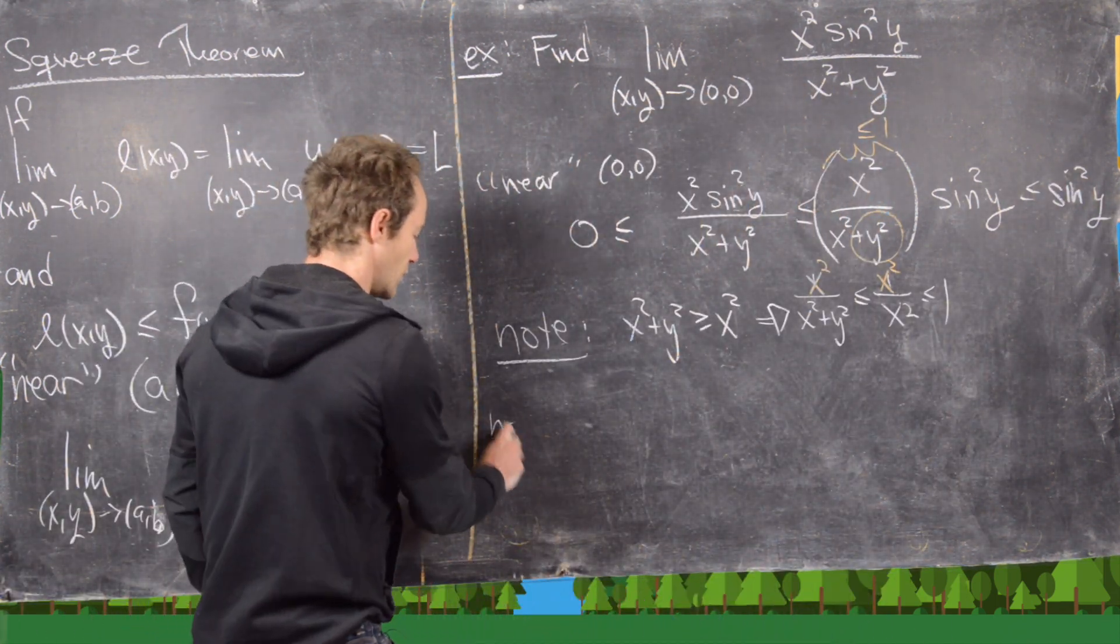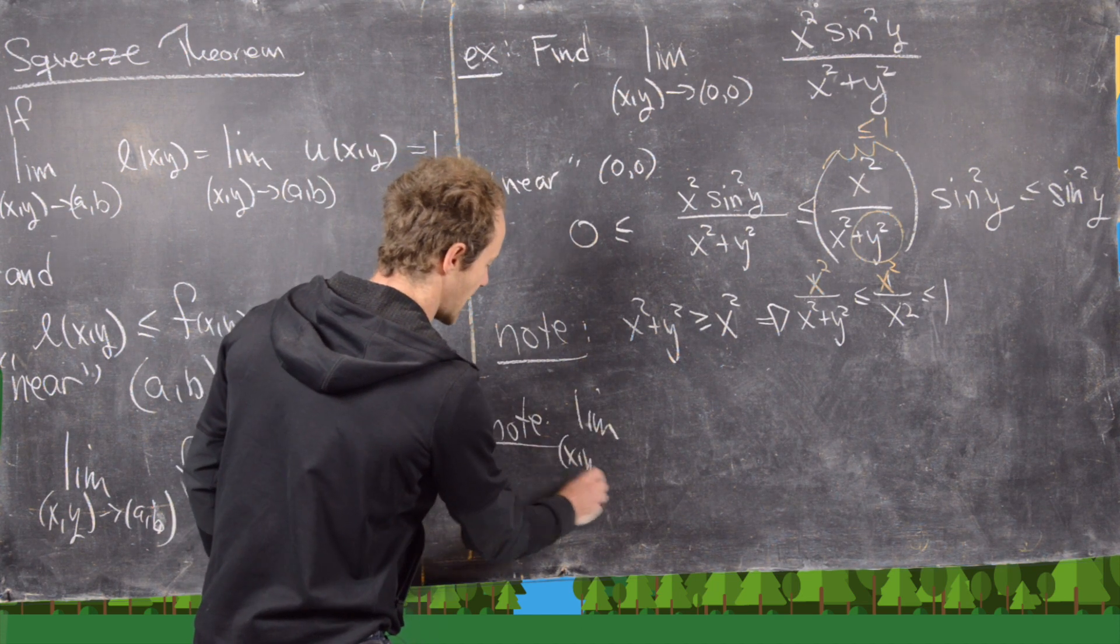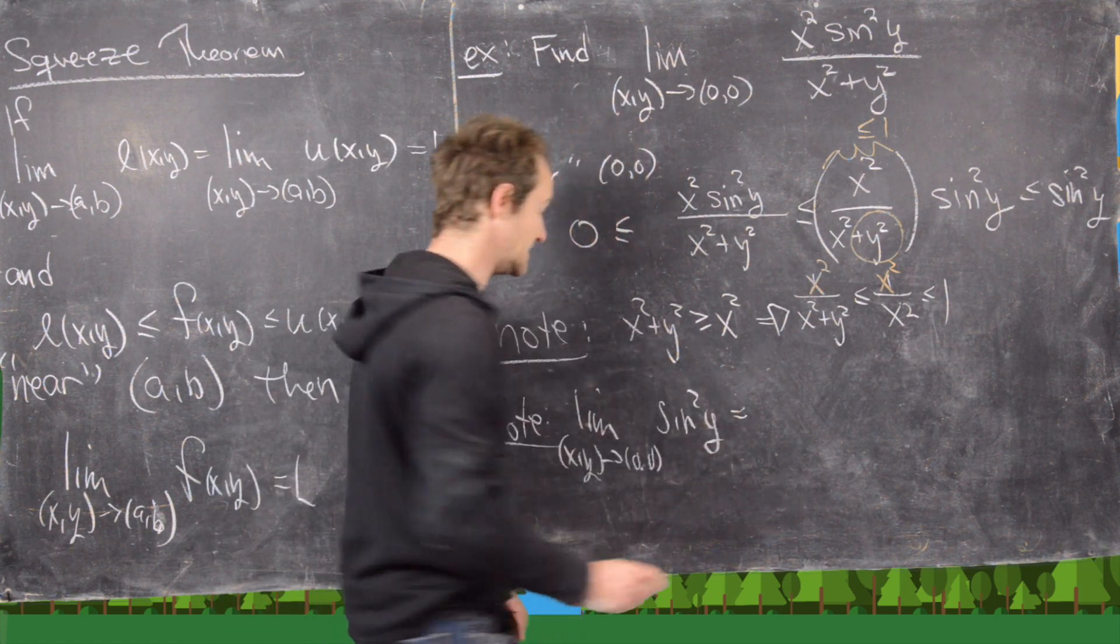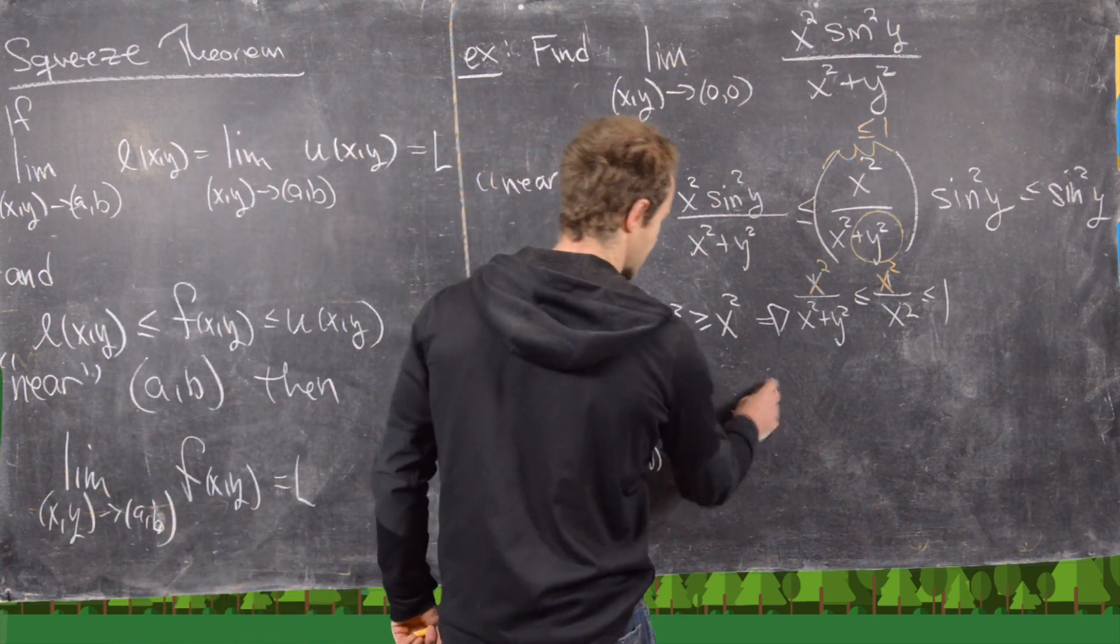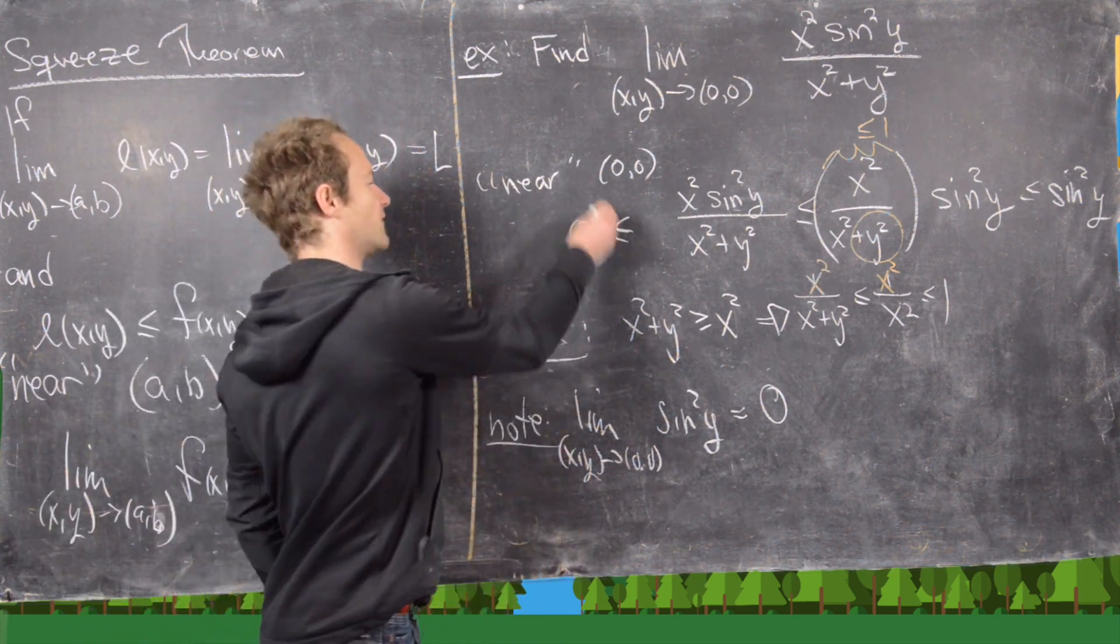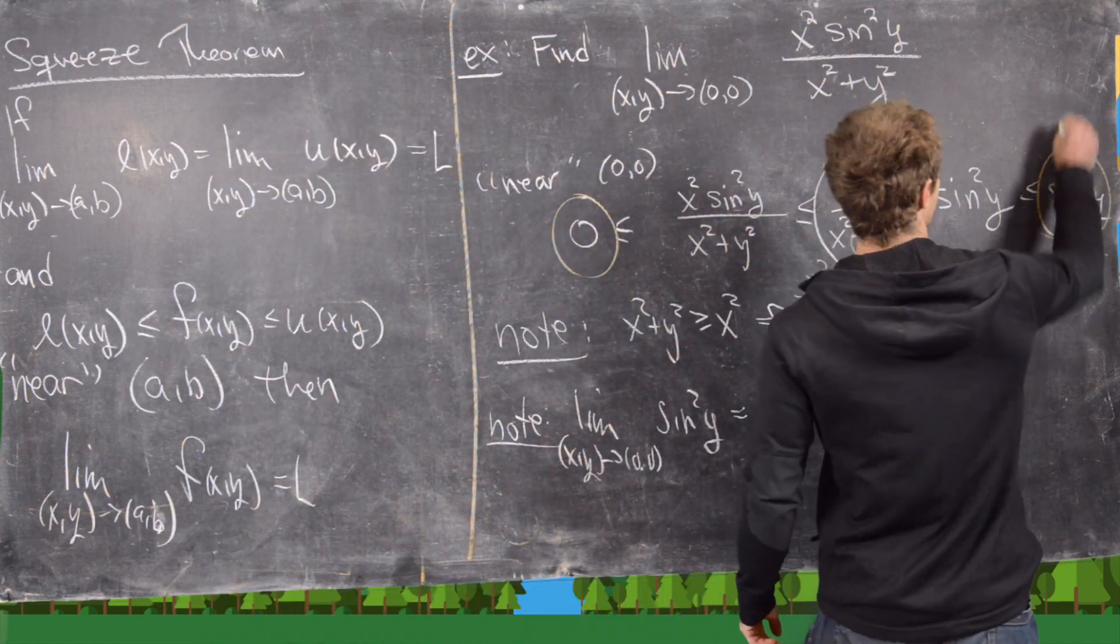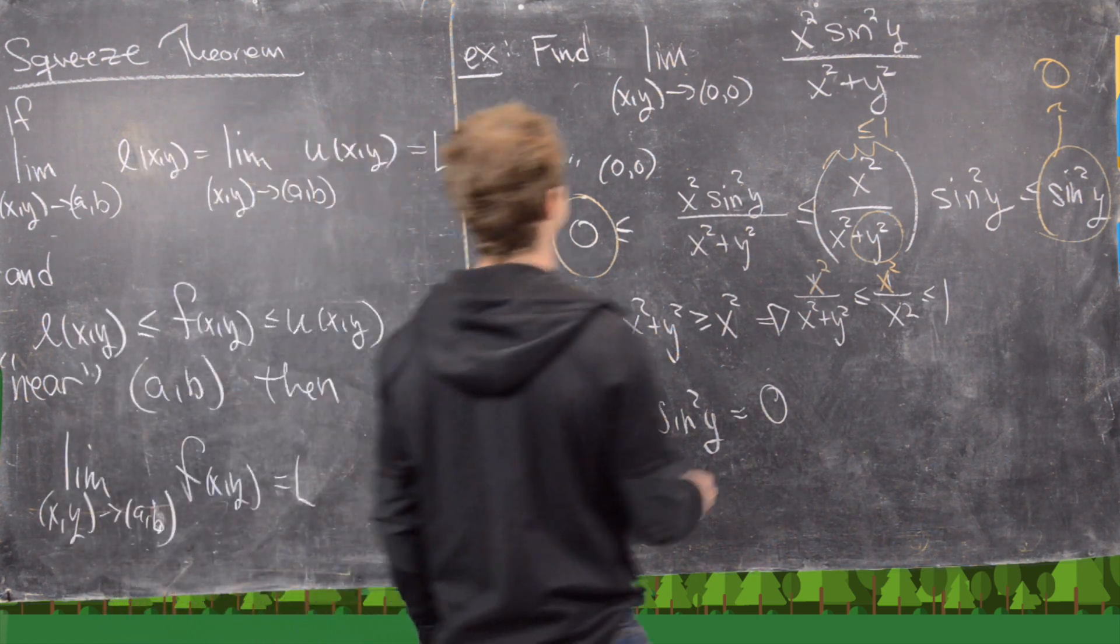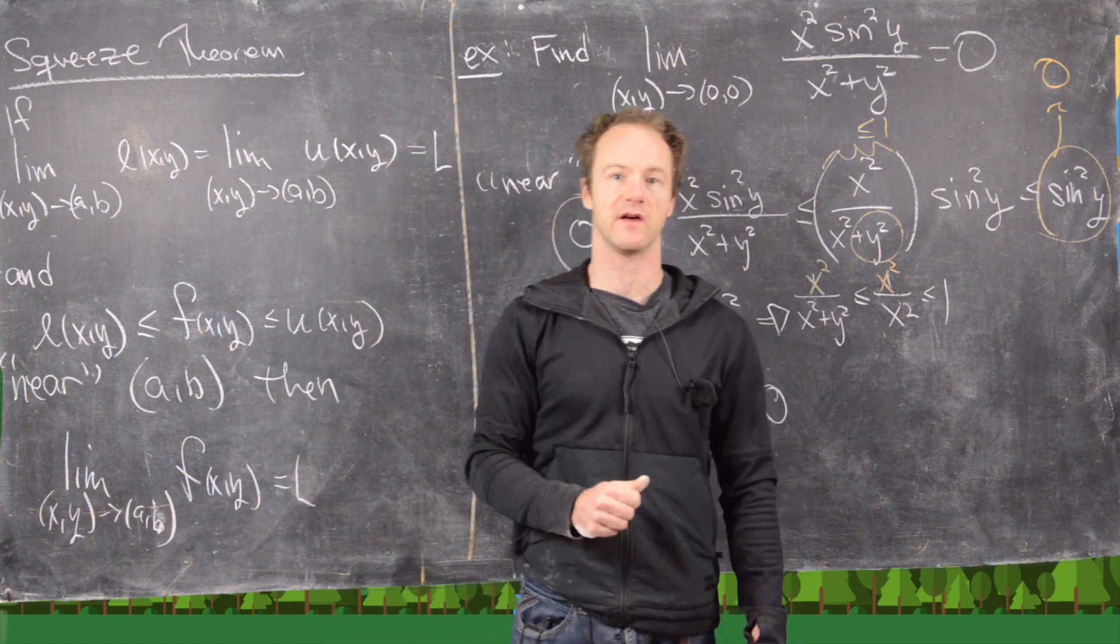Now the next thing we can also notice is that the limit as xy approaches the origin of sine squared y is an easy calculation given the fact that sine squared is continuous at the origin. So we can just plug in 0 and we'll end up with 0. So here we have a lower function which is already equal to 0, and then we have an upper function which is easily approaching 0, which tells us that our final limit is equal to 0 by applying the squeeze theorem.